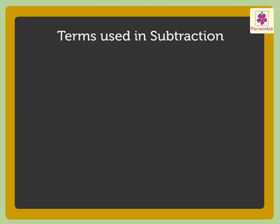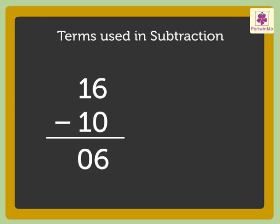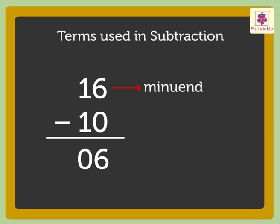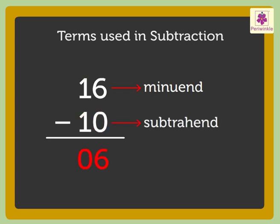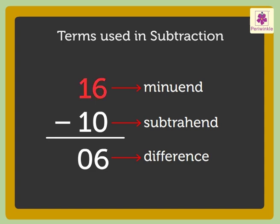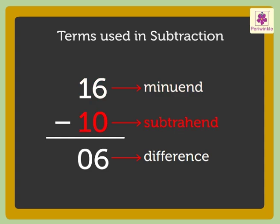Do you remember the terms used for the numbers in subtraction? The number from which the other number is subtracted is called the minuend. The number that is subtracted is called the subtrahend. The answer we get after the subtraction operation is called the difference. In the example just solved, 16 is the minuend, 10 is the subtrahend, and 6 is the difference.